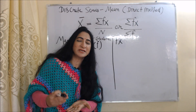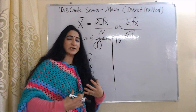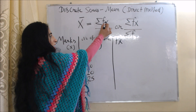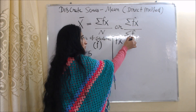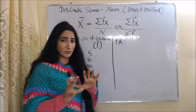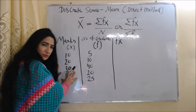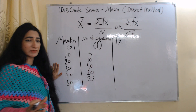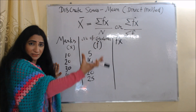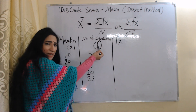Now we are going to talk about how to calculate mean by direct method in discrete series. The formula is x̄ = Σfx / n, or we can say Σfx / Σf. Note that n and Σf are the same — don't be confused. In the first column, marks of students are given. In the second column, number of students are given. We can identify this is a discrete series because frequencies are given here. The number of students represents our frequency, or f.